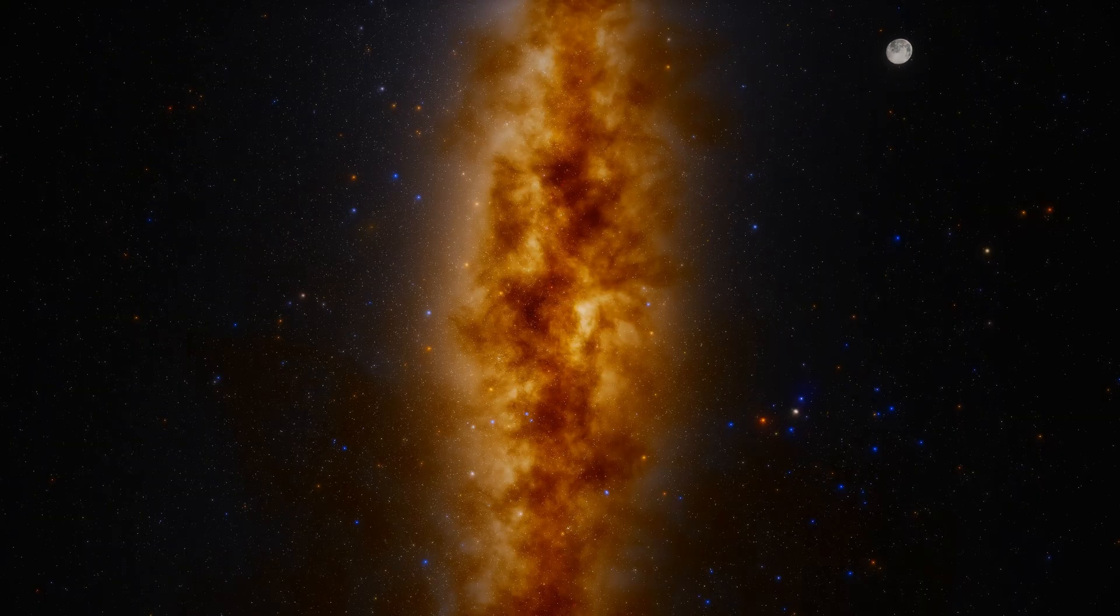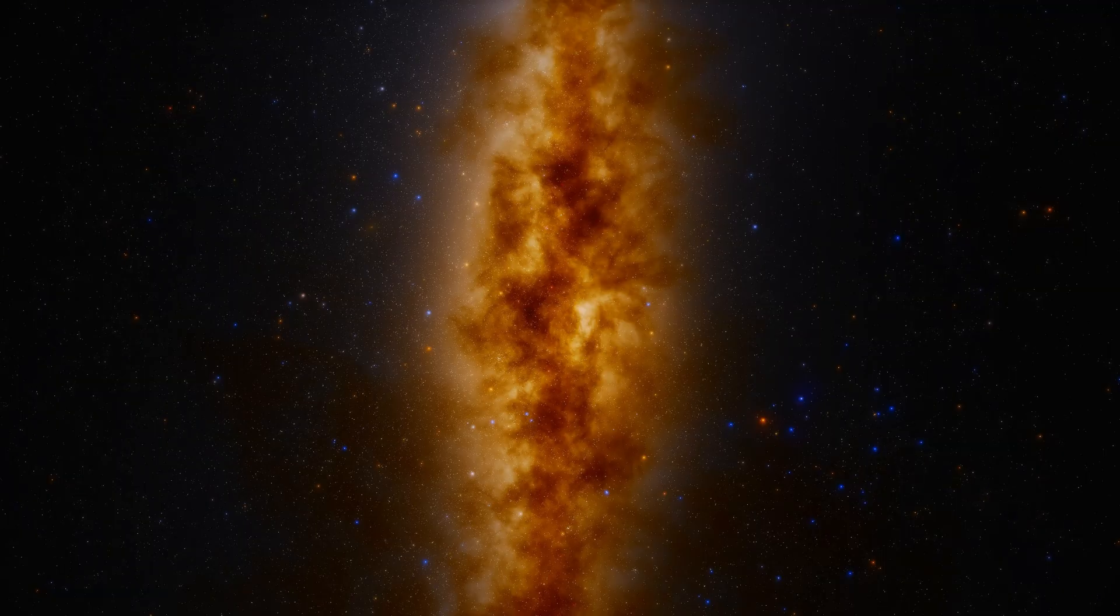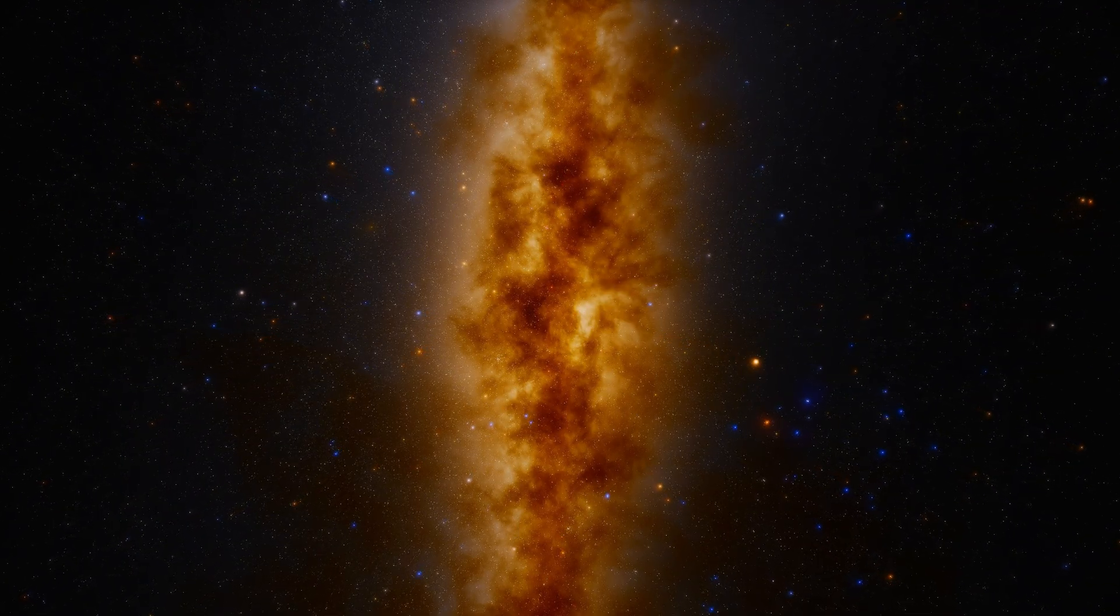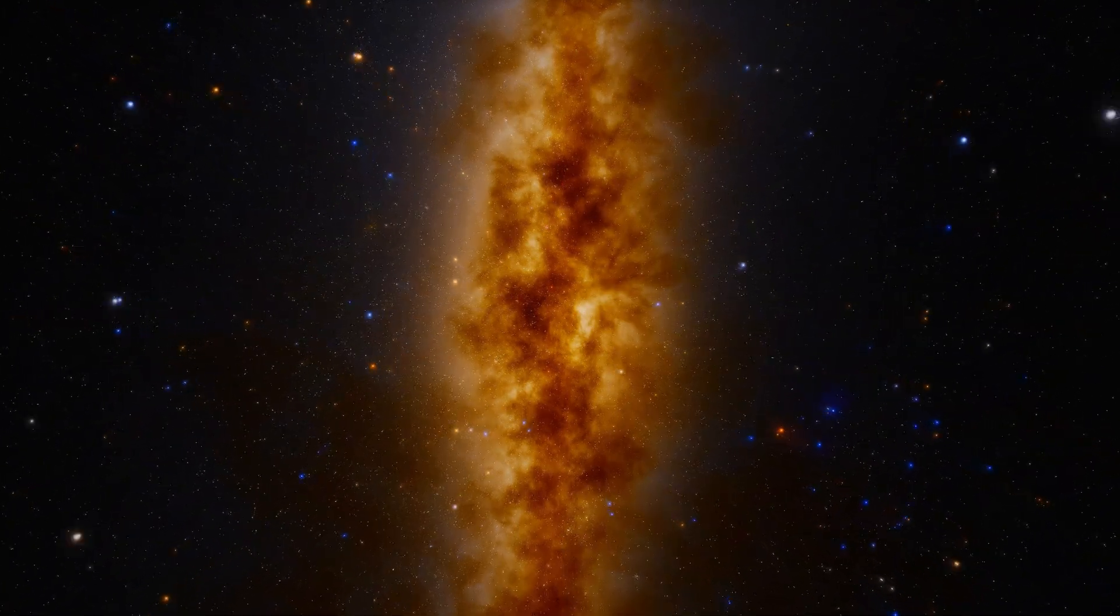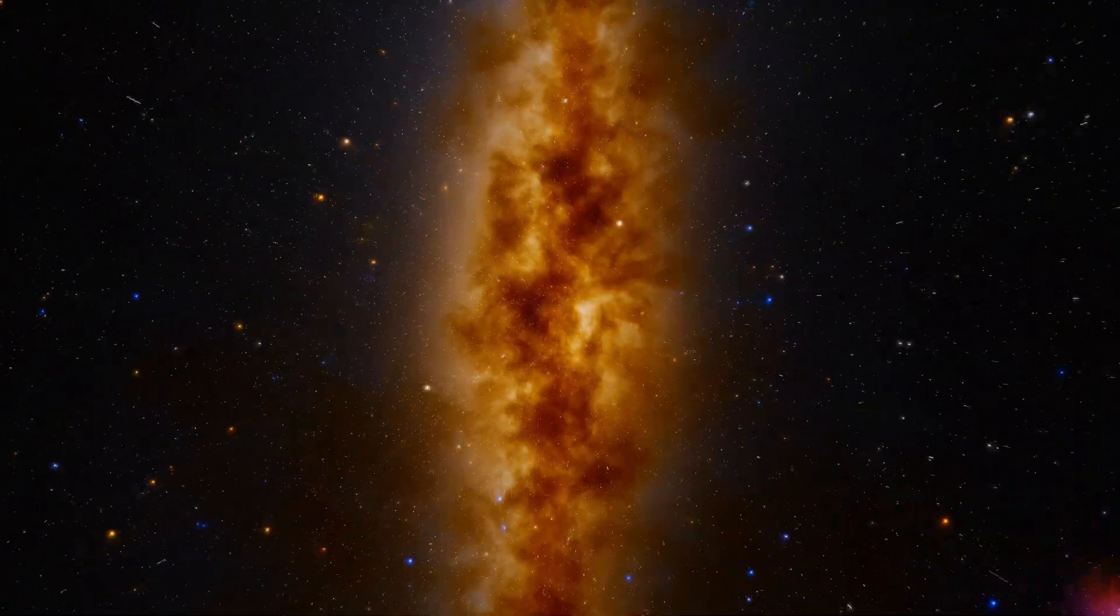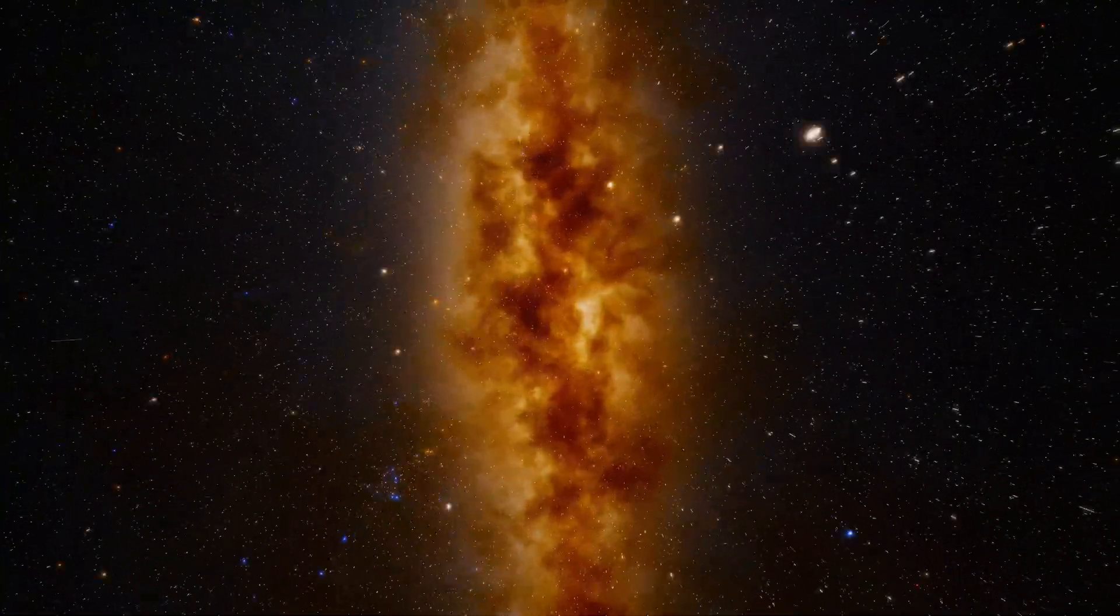Our solar system sits about halfway between the edge of the galaxy and its center, in a quiet region called the Orion Arm. From here, the core of the Milky Way is completely hidden from view. Thick clouds of dust block everything. For centuries, astronomers had no idea what was hiding in there. Right now, we're leaving our local neighborhood of stars behind.